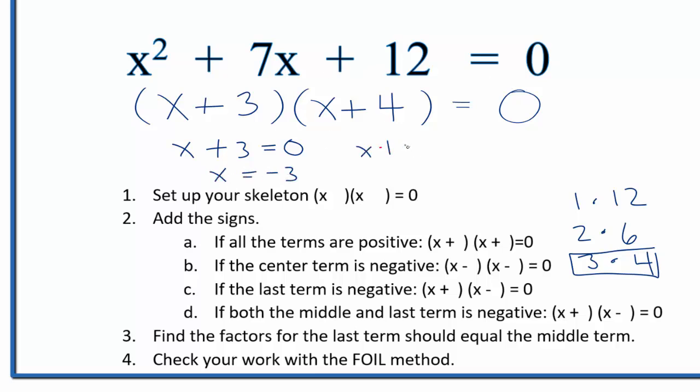Over here, x plus 4 equals 0. Add minus 4 to both sides. x equals minus 4. And what that means is if you put minus 4 in for x here and you add these numbers up, all of this will equal 0.